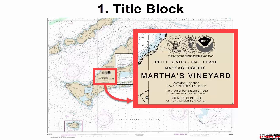Title blocks show the region of the world, sub-region, projection, scale, and datum. Here our region of the world will be the United States' east coast, and the sub-region will be Massachusetts' Martha's Vineyard. This chart uses a Mercator projection on a scale of 1 to 40,000, and right away we can tell this scale will be ideal for close coastal inland navigation.